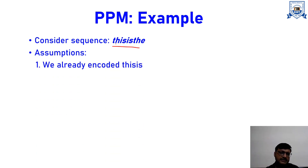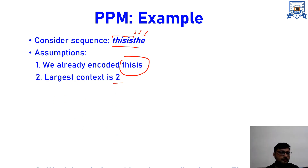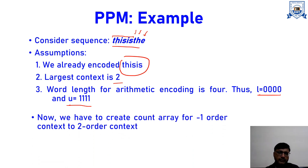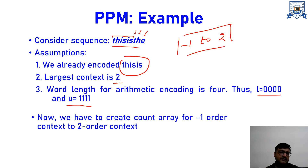This is the sequence we are going to encode, and we are assuming we have already encoded part of it. Now we are going to encode T, then H, then E. The largest context we have decided is 2. As in arithmetic coding, the lower limit is 0 and the upper limit is 15, which in binary is four 1s. We are going to create count arrays from minus 1 to the highest order context, which is 2, giving us 4 tables: minus 1, 0, 1, and 2.